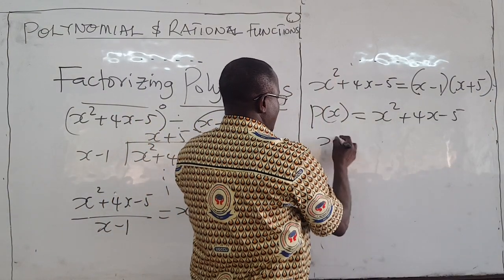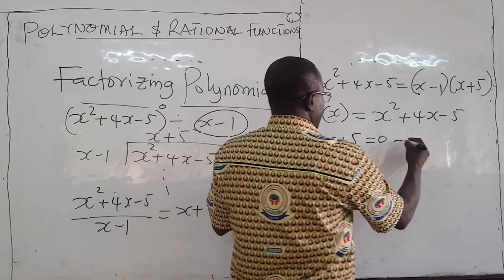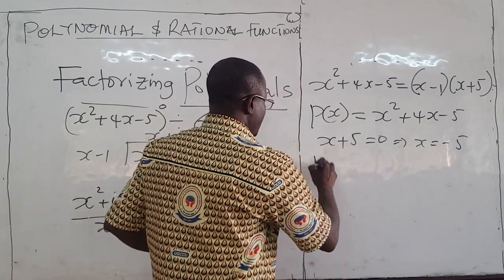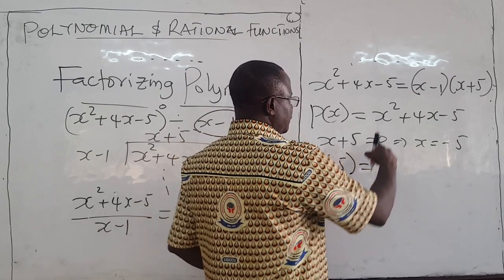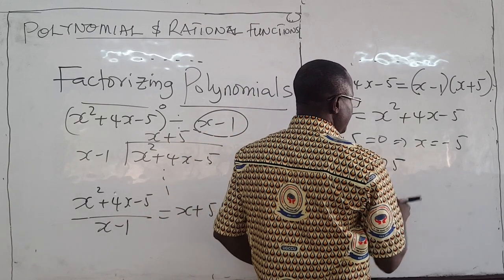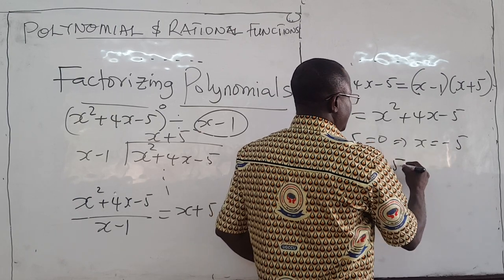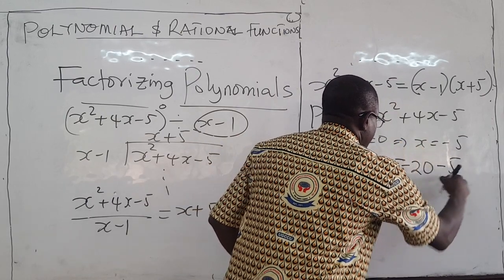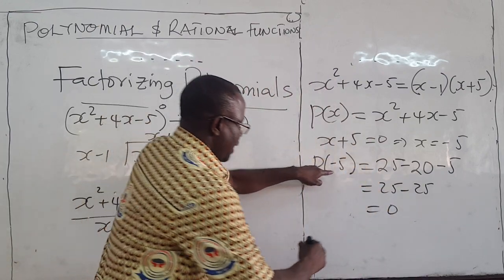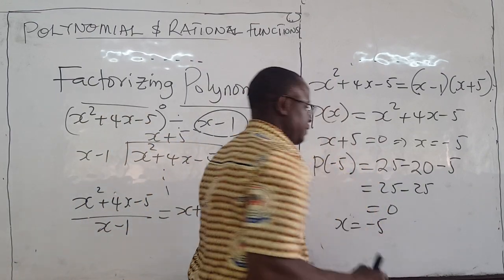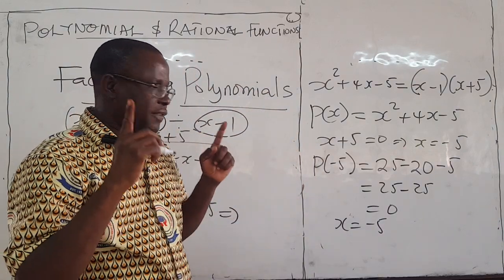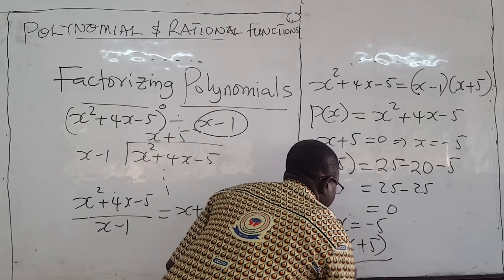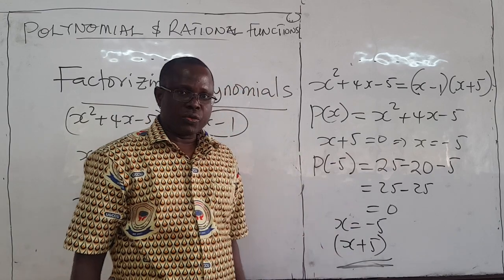This is also a factor. So x plus 5 set to zero gives x equals negative 5. What happens if I put negative 5 in the expression? p(negative 5) equals negative 5 squared plus 4 times negative 5 minus 5, which is 25 minus 20 minus 5, equal to zero. So x equals negative 5 is also a zero of the polynomial, meaning x plus 5 is also a factor.